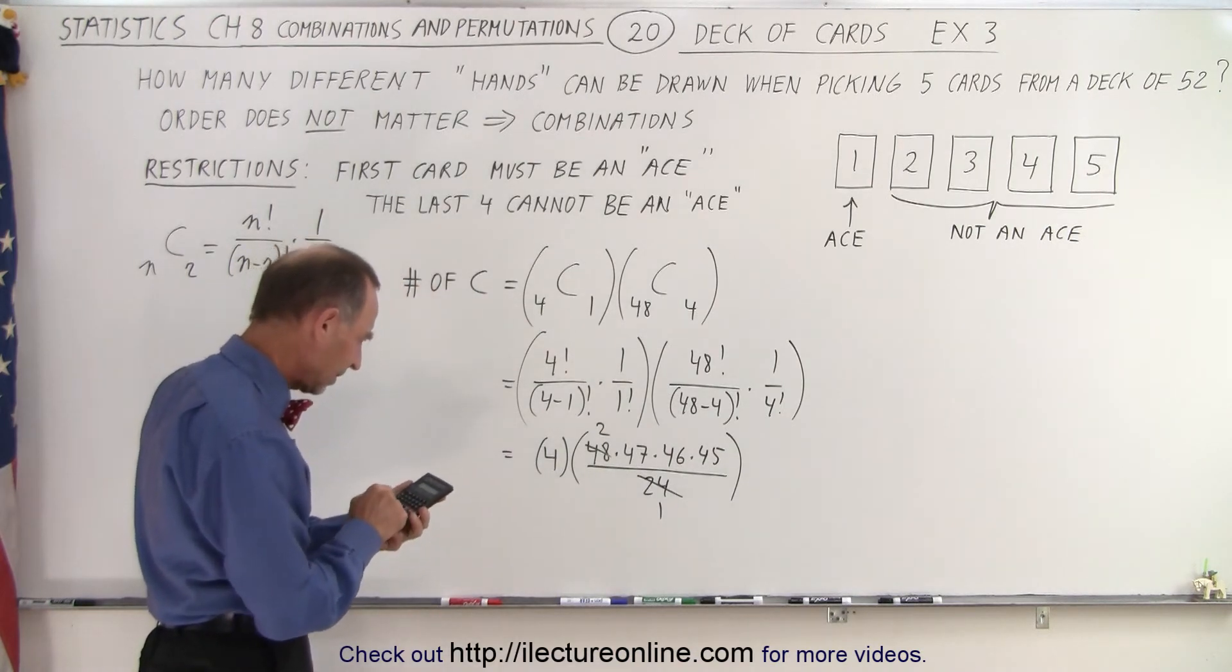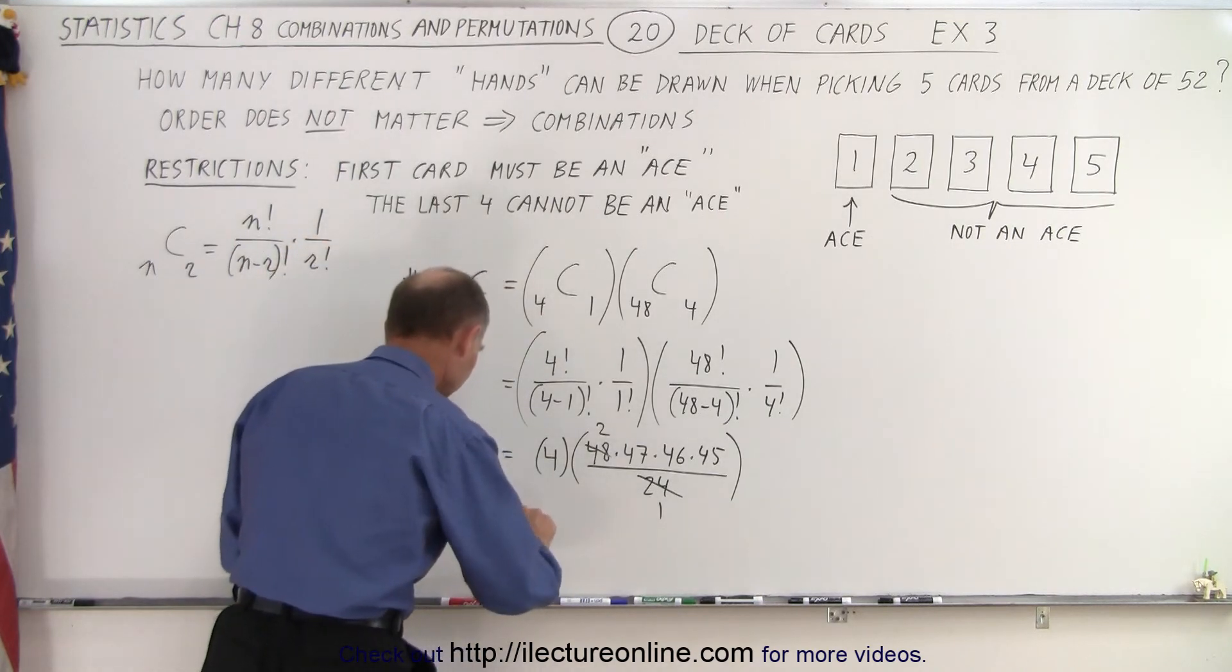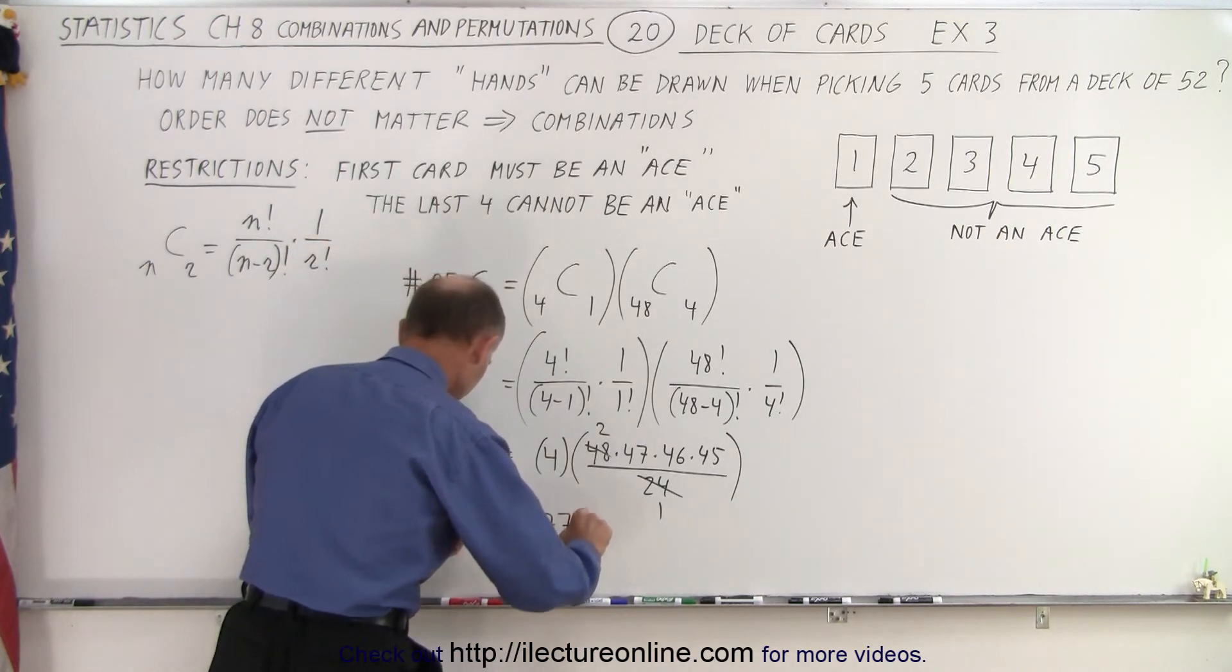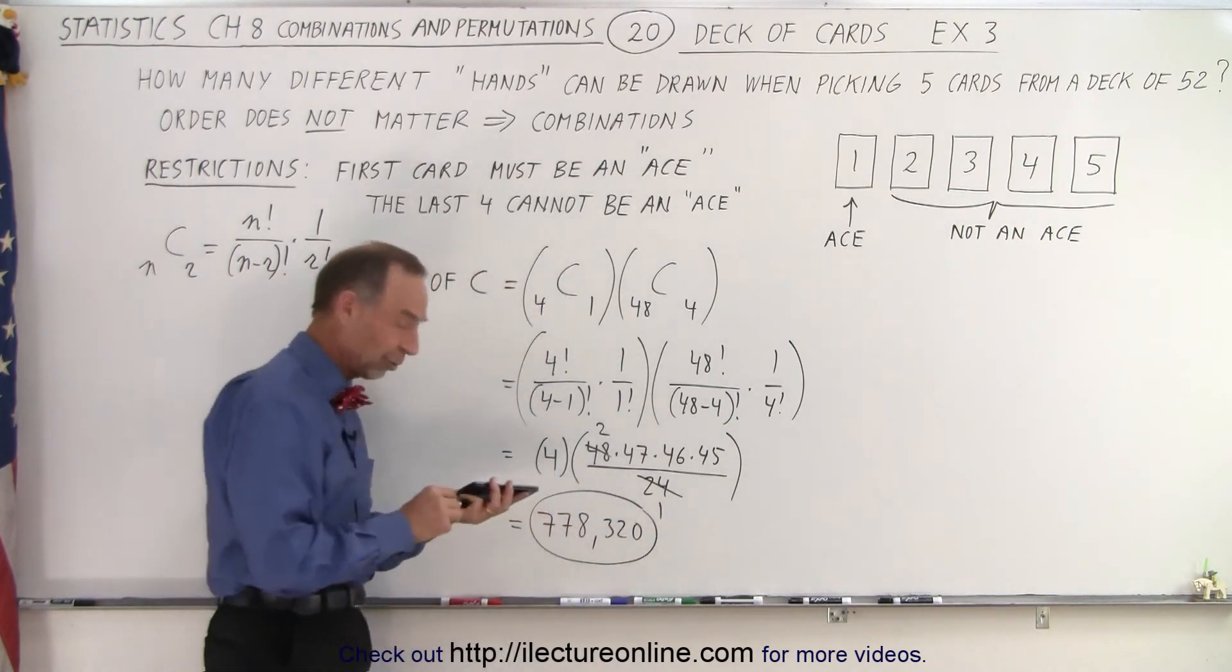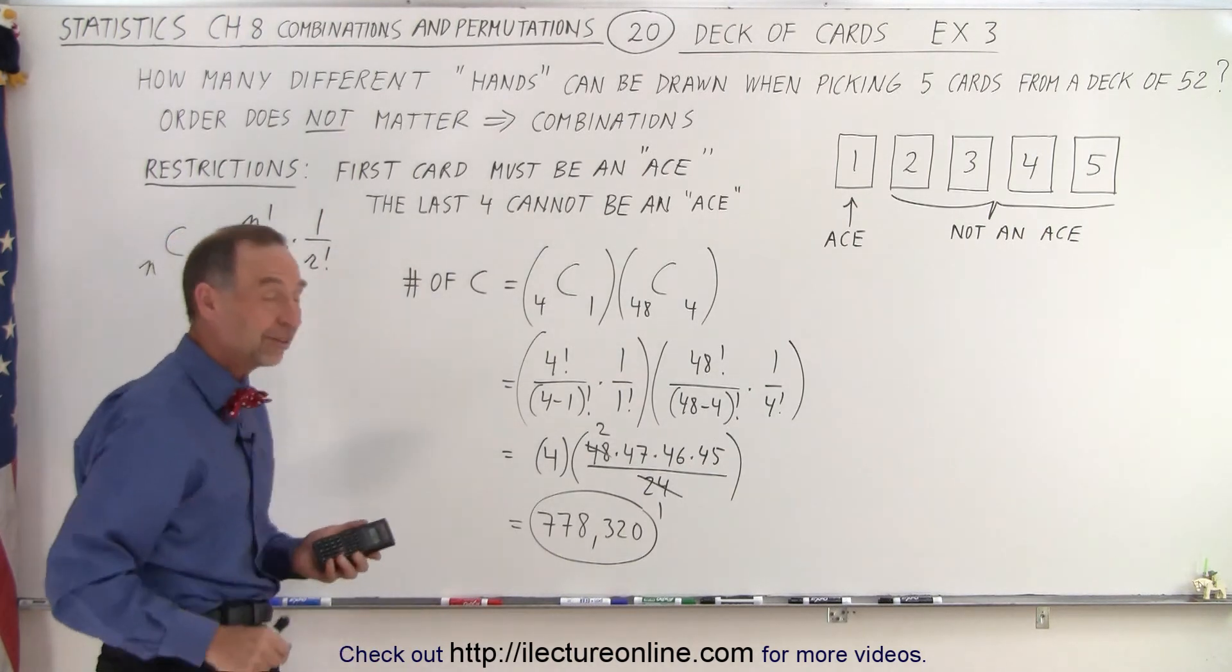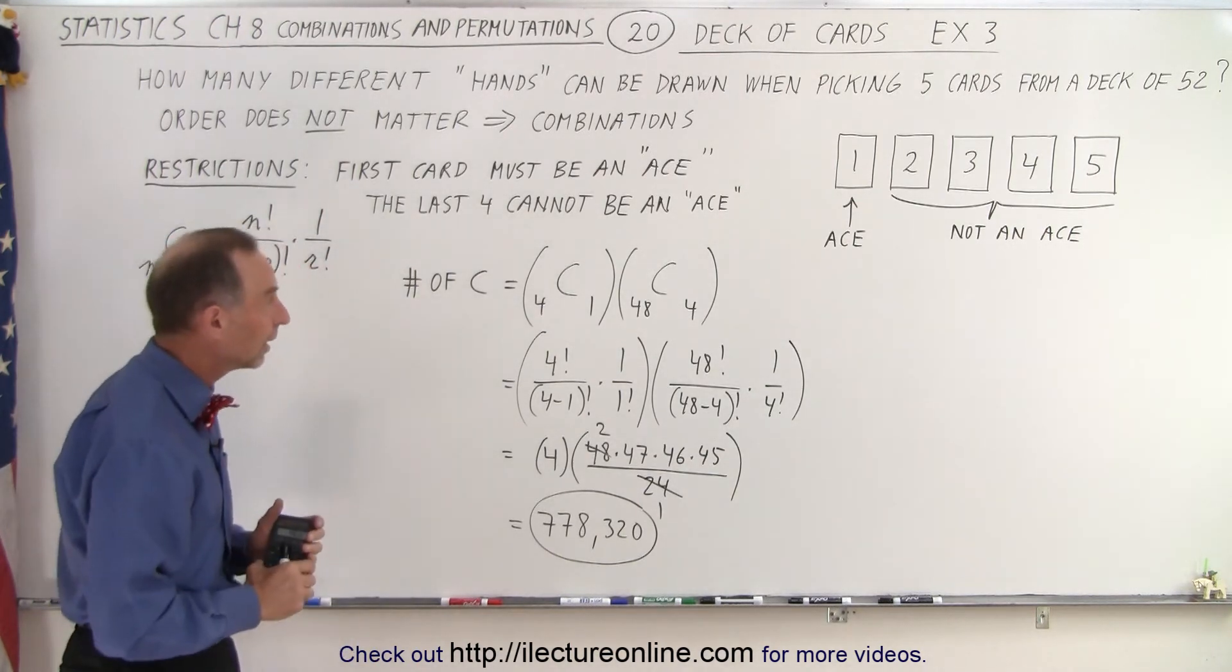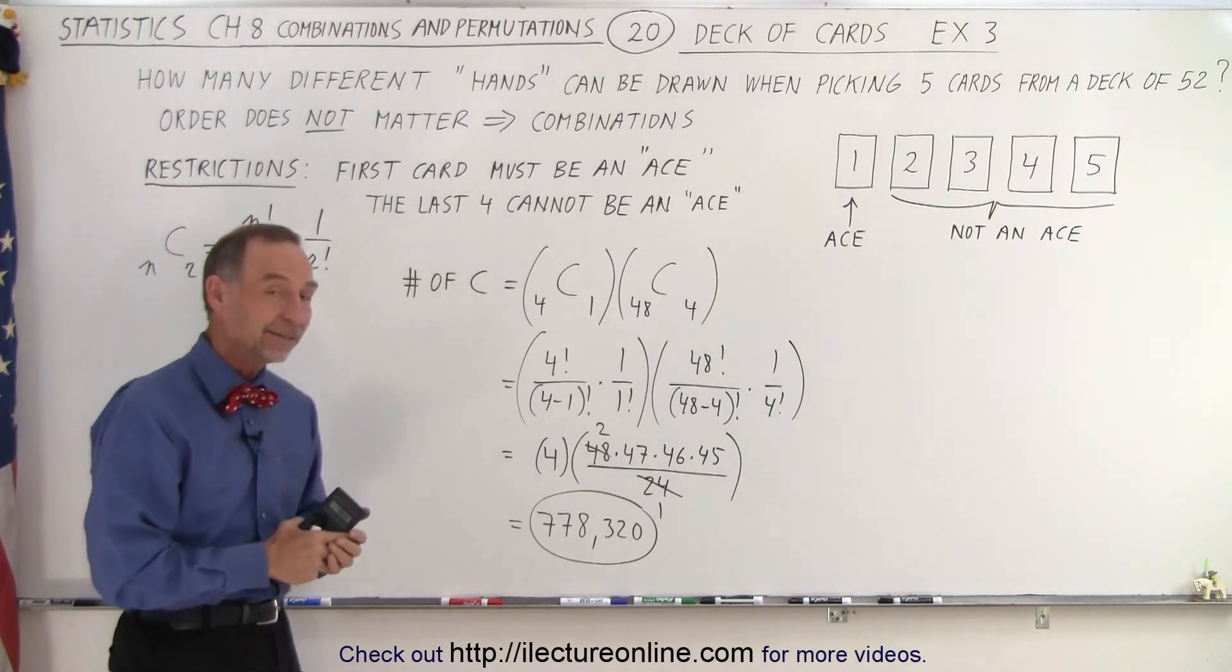So we have 2 times 47 times 46 times 45, and that gives us a total number of combinations now of 778,320. So again that's being reduced from slightly less than 1,000,000 when we only have one restriction to 778,320 when we have those two restrictions. And that is how it's done.